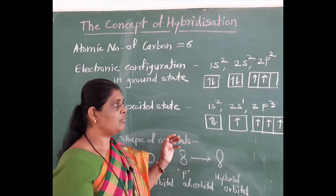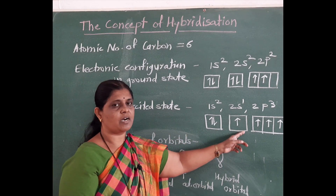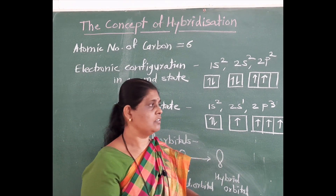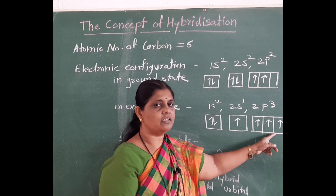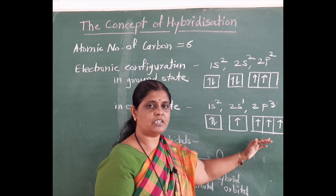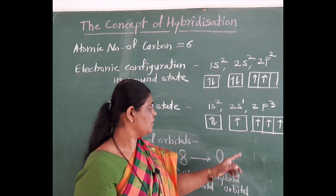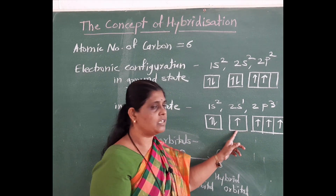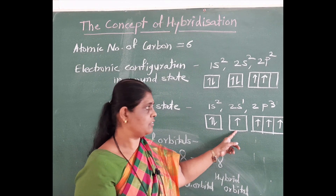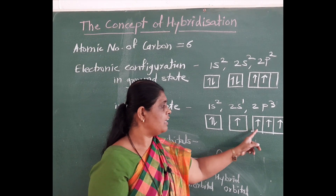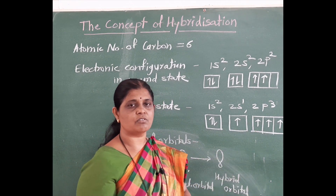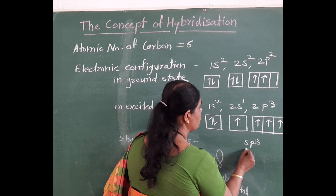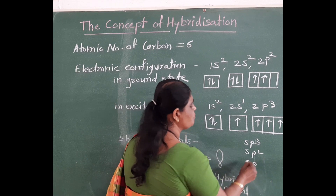With the help of hybridization, we can show that the valency of carbon is 4. In the case of carbon, there are 3 types of hybridization. If there is mixing of 1 S and 3 P atomic orbitals, that hybridization is known as SP3 hybridization. If there is mixing of 1 S and 2 P atomic orbitals, that hybridization is known as SP2 hybridization. There are 3 types of hybridization: SP3, SP2, and SP hybridization.